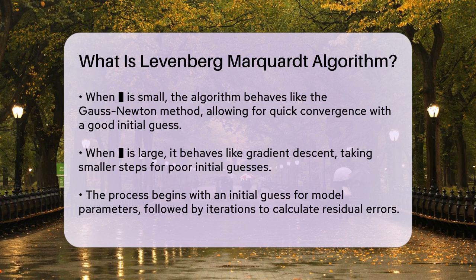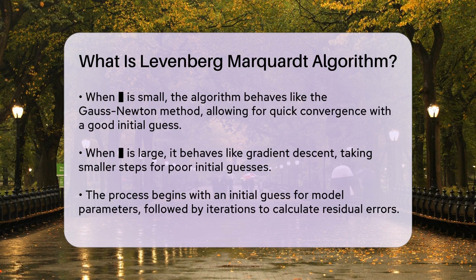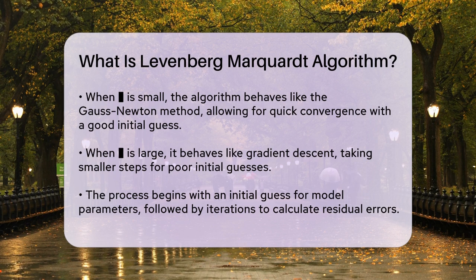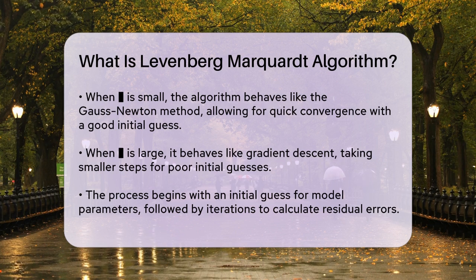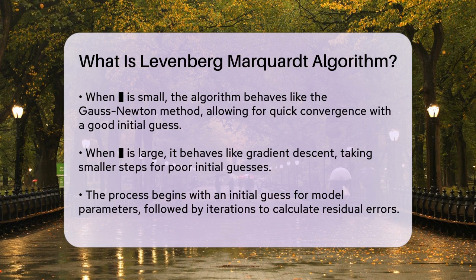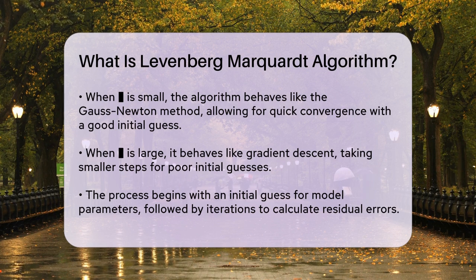Here's how it works in practice. You start with an initial guess for the parameters of your model. Then, in each iteration, you calculate the residual errors between your model predictions and the actual data points. You use these errors to update your parameters. The key step involves solving an equation that includes the Jacobian matrix, which describes how the model changes with respect to the parameters, and the damping factor, lambda.